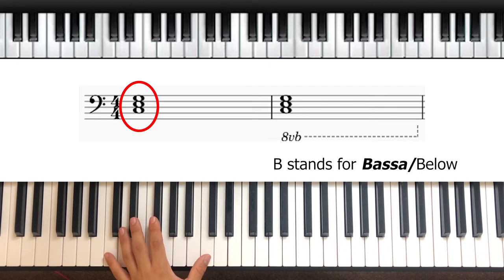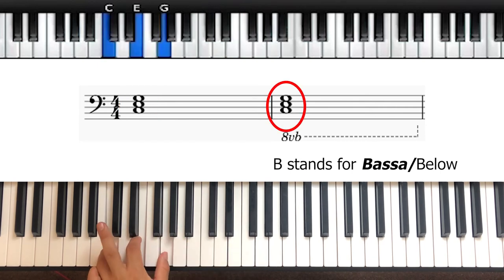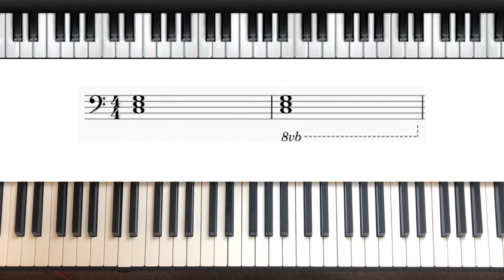Using this, these notes would now be played here. So you can see how you can avoid extending the ledger lines unnecessarily by simply writing ottava bassa.